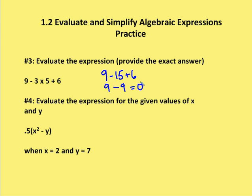Okay, the last problem. Evaluate the expression for the given values of X and Y. So here we have two values of X and Y. X is equal to 2, Y is equal to 7. I'm going to go ahead and substitute those in. So now I have 0.5(2 squared minus 7).